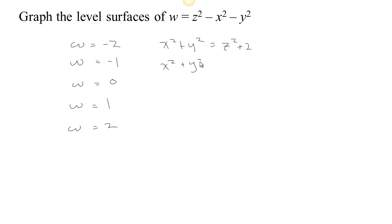x squared plus y squared equals z squared minus minus 1 is plus 1. x squared plus y squared equals z squared. There's a cone. x squared plus y squared equals z squared minus w, so z squared minus 1, and x squared plus y squared equals z squared minus 2.